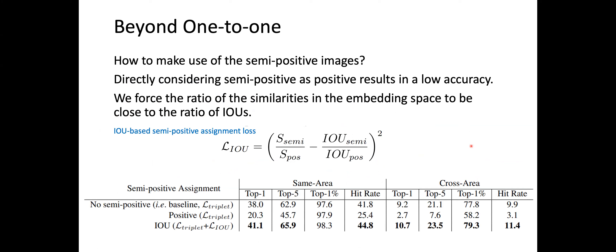Since one query image may have semi-positive images, the question is how to use them. We can directly consider semi-positive as positive samples, but results show this leads to lower accuracy. In our proposed method, we force the ratio of similarity in the embedding space to be close to the ratio of IOUs — we call this the IOU-based semi-positive assignment loss. Results show that using this IOU loss greatly improves performance.